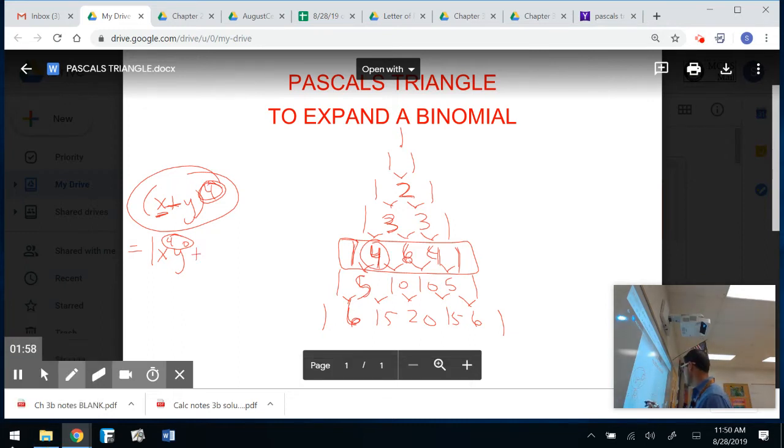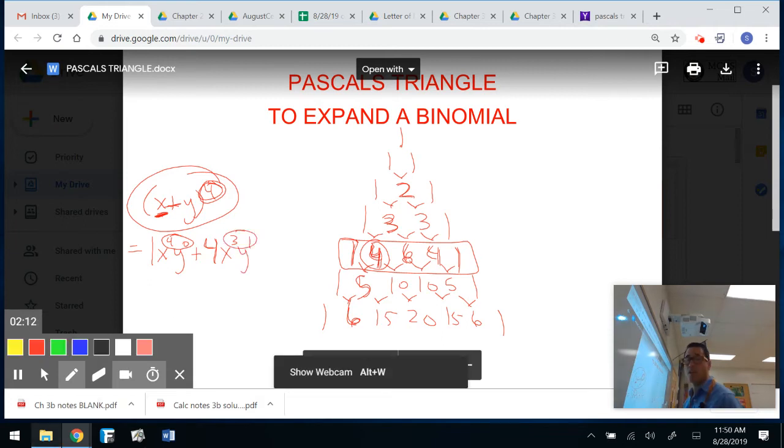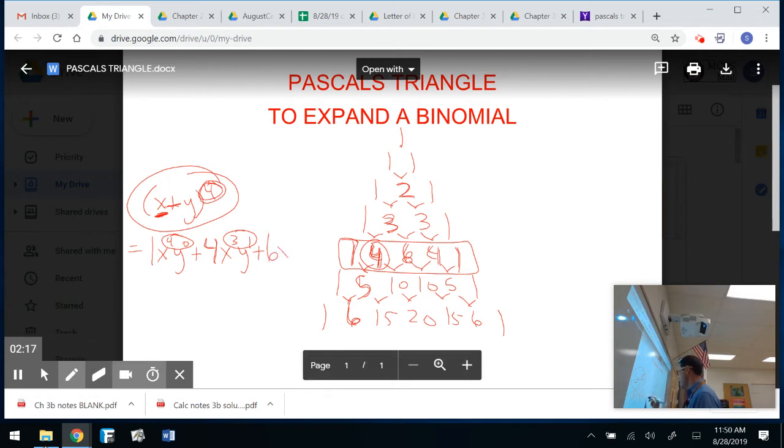Okay. The exponents always have to add to that exponent out there. Plus, my next coefficient would be four. Why? Four is my second term right there. That's my second leading coefficient. And then it would be x to the third because the first term goes down, the second term goes up. Remember, still adds to four. Plus, what's the next coefficient? It is a six, x squared, y squared. Can you finish it? Plus, next coefficient, four, x, y to the third, plus one, x to the zero, y to the fourth. Done.